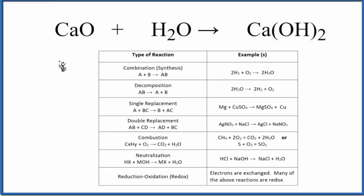In this video, we'll look at the type of reaction for CaO plus H2O, which yields Ca(OH)2. So this is calcium oxide plus water, and it's giving us calcium hydroxide here.